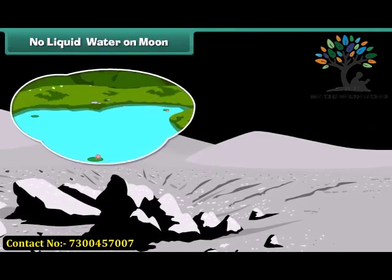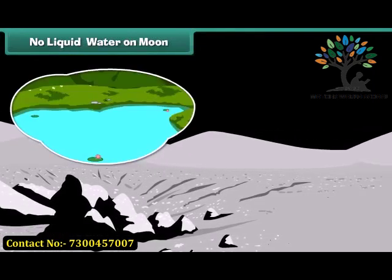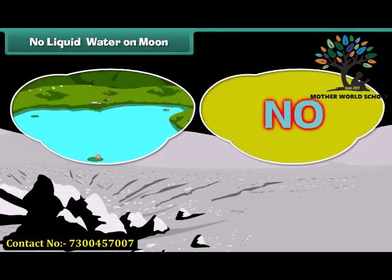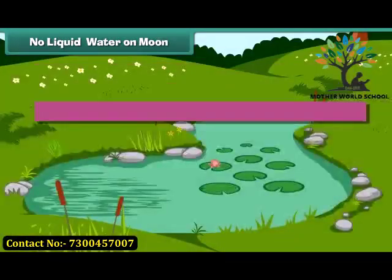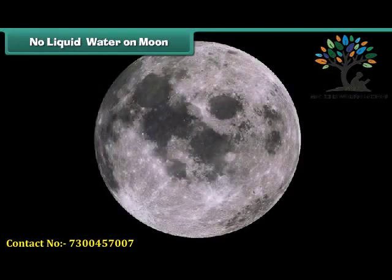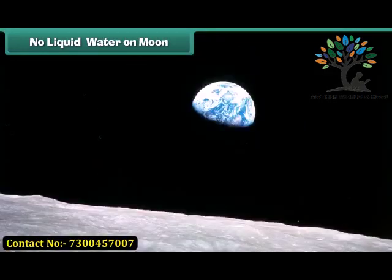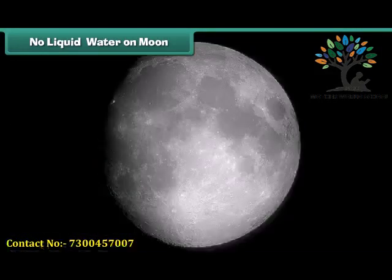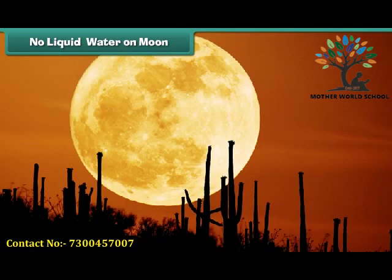Do you think the moon also has water like our Earth? No, there is no liquid water on the moon, but there is some water in the form of ice. Recently, a NASA spacecraft discovered nearly about 100 kilograms of ice and water vapor near the moon's south pole, and it is possible that there is more buried under the surface of the moon.